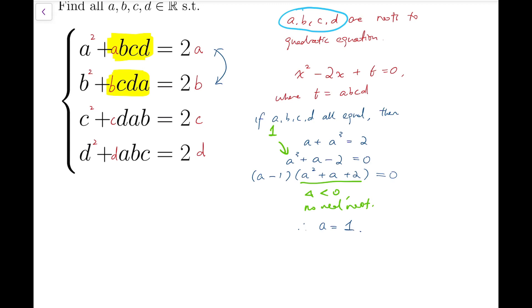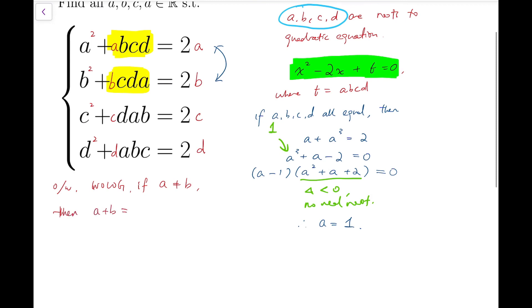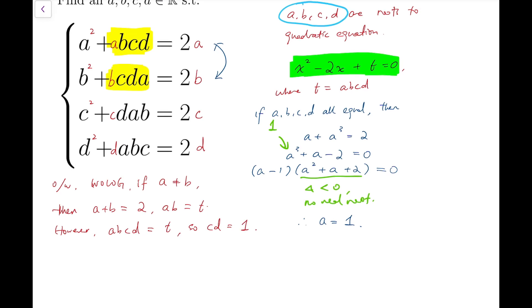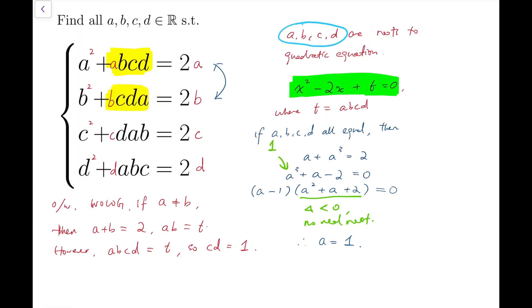Now what happens if some of them are not equal? Let's say, otherwise, WLOG, if a, b are not equal, then we know that those two values are exactly the roots to this quadratic equation. So I can say that sum of roots a plus b equals 2, while ab, the product of roots, is equal to t. However, abcd is equal to t as well. So that means the product of the other two letters can only be 1. But from what I've said earlier, c and d are still roots to this equation, our original quadratic equation.